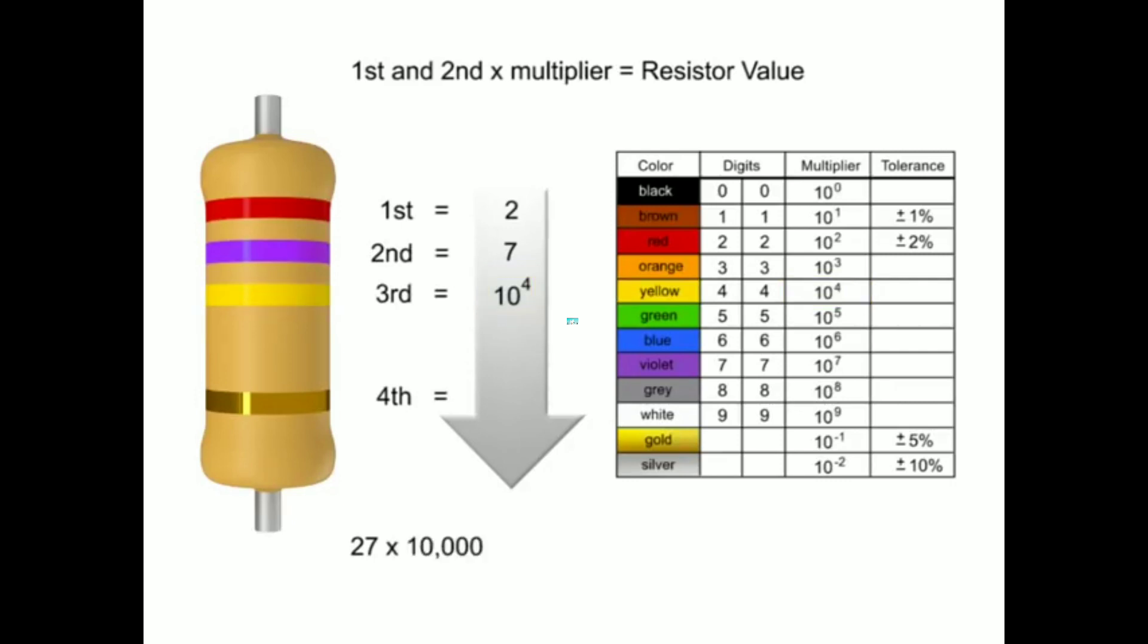Thus the value of this resistor is 270 kilo ohms with a tolerance of plus or minus five percent.